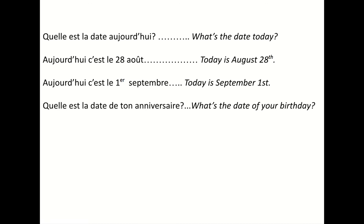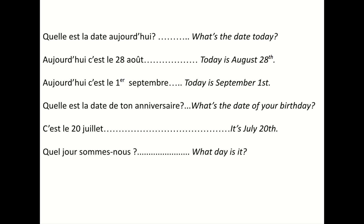Quelle est la date de ton anniversaire? What is the date of your birthday? C'est le 20 juillet. Or whatever the date of your birthday is. Remember, when the French give the date, they give the number first and then the month — the day and then the month. And if you simply want to ask what day is it, we say quel jour sommes-nous? Quel jour sommes-nous? And the response is nous sommes mercredi, or whatever day it is. So that translates as: what day are we? We are Wednesday.